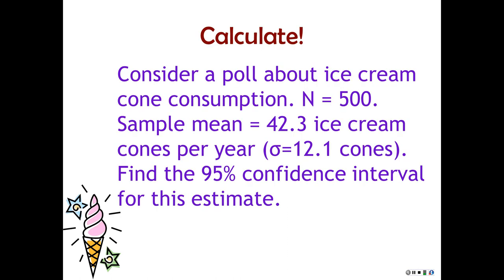Let's run through some examples. Consider a poll about ice cream cone consumption with a sample size of 500. The sample mean is 42.3 ice cream cones per year, and for some reason we know that the population standard deviation of ice cream cone consumption is 12.1 cones. We can't do this particular type of problem without knowing that. Find the 95% confidence interval for this estimate.